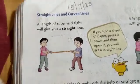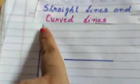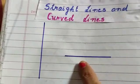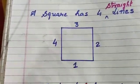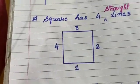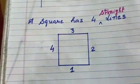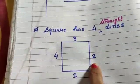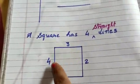Now let us see a few examples of straight lines. See, this is a straight line. This is a straight line. We have already studied shapes. See, a square has four straight lines — one, two, three, four.